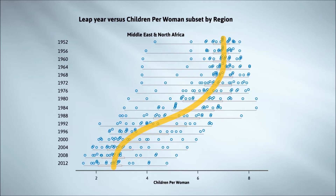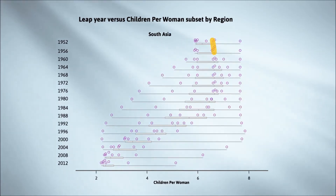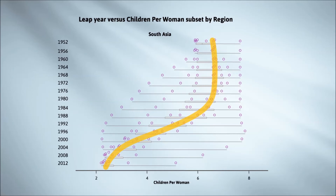Very recently, the change seems to have slowed down, perhaps even stopped. There's a very similar pattern for South Asia, but the slide to the left seems to have started a little later, at about 1980, and there is no sign that it has stopped.